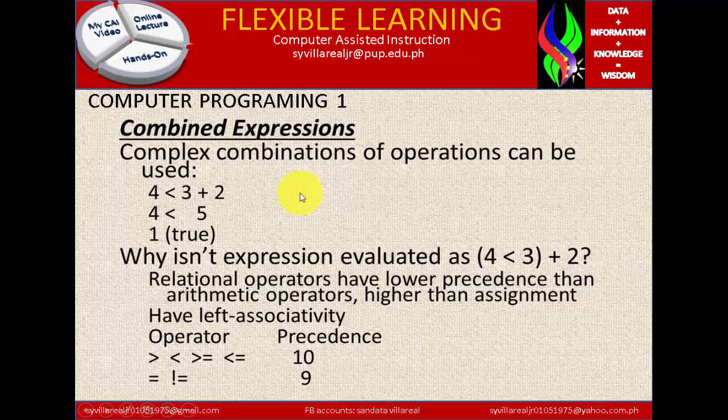Now we have combined expression. Complex combination of operations can be used. 4 is less than 3 plus 2. So this is what you call combined expression. It is called combined expression because there is relational expression and there is also mathematical or arithmetic expression - plus sign. 4 is less than 3 plus 2, that is true. Because 3 plus 2 equals 5, and 5 is greater than 4. So we have here 4 is less than 5, and that is true.